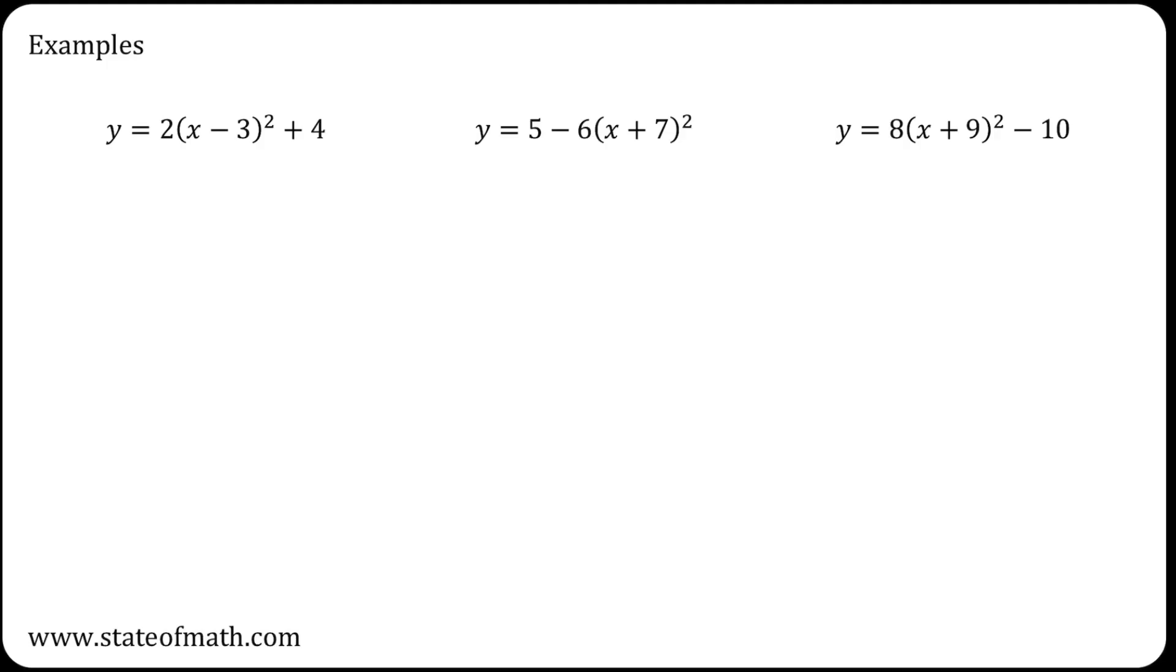For example, consider the following three quadratic graphs. For the first one, the coefficient of the bracket is positive. Hence, I will have a minimum point. To find this minimum point, take the x value that makes the bracket equal to 0. And in this case, the value is 3. Once the bracket is 0, this disappears and you are left with a 4. So the turning point has coordinates 3, 4.